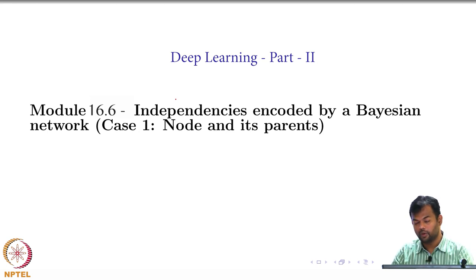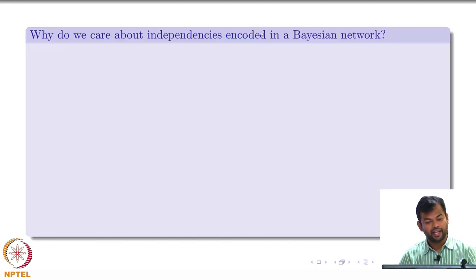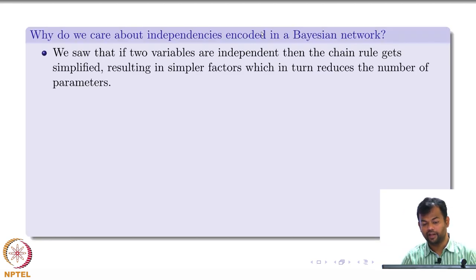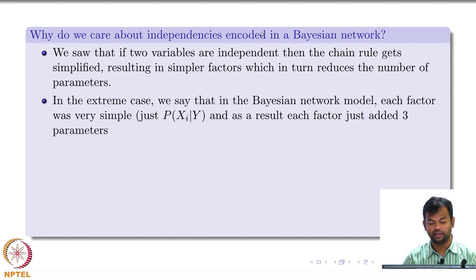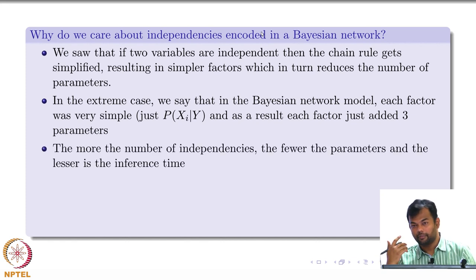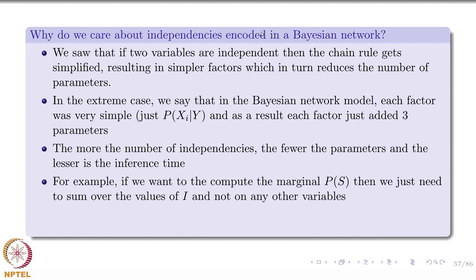So let us look at one case which is the node and its parents, which is the most obvious case. So why do we care about independence? We saw that if two variables are independent, then the chain rule gets simplified. That was one thing. In the extreme case, we saw this naive Bayes model where we are just left with very minimalistic number of parameters because we assume that everything was independent. And the more the number of independencies, the fewer the number of parameters, and better is the inference time, and there are various such other advantages of this.